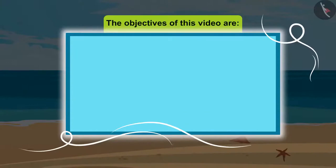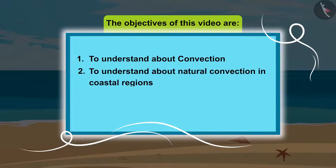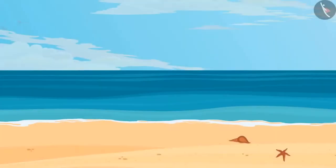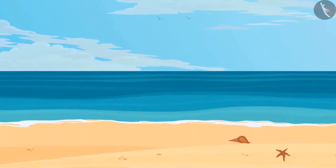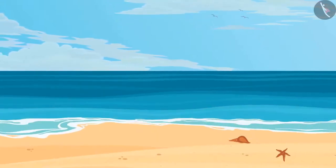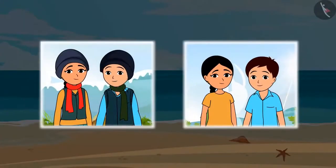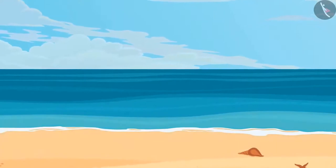The objectives of this video are: 1. To understand about convection, 2. To understand about natural convection in coastal regions, 3. To understand why we wear clothes according to the weather and why we wear light colors in summers and dark colors in winter. Come, let us find the answers to such questions with the characters of this story, Mala and Raja.